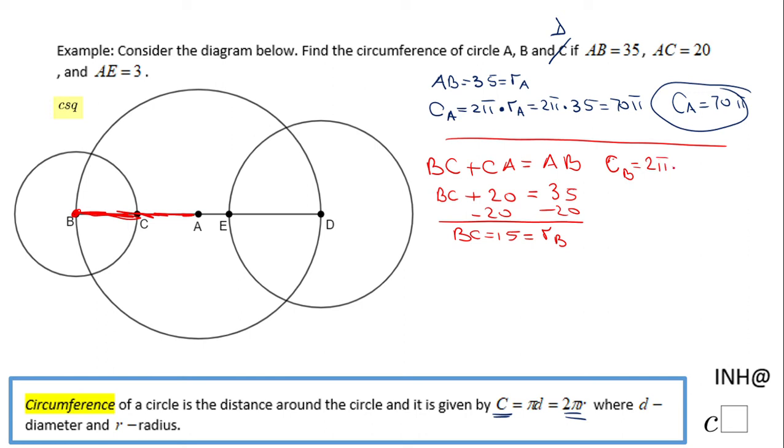We can find the circumference of circle B using 2π times the radius of circle B, so it's going to be 2π times 15, and the final answer will be 30π.